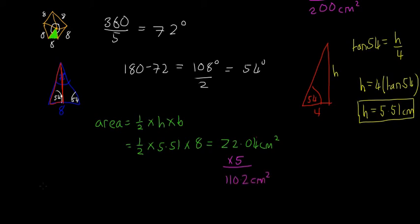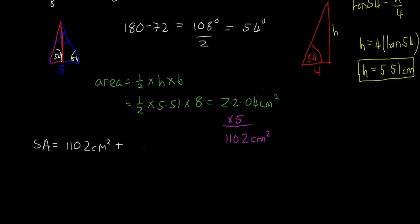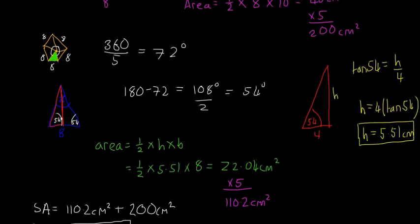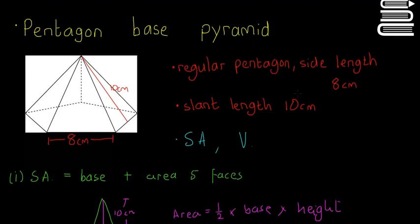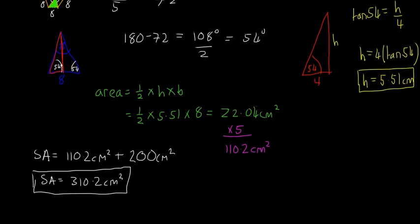So the total surface area is 110.2 centimetres squared (area of the base) plus 200 centimetres squared (area of the five faces), giving a total surface area of 310.2 centimetres squared. That's what you do no matter what the shape of the pyramid is — find the area of each face and the area of the base. For bigger polygons use this method; for a square or triangle base it's a bit easier.